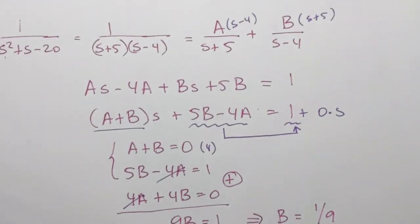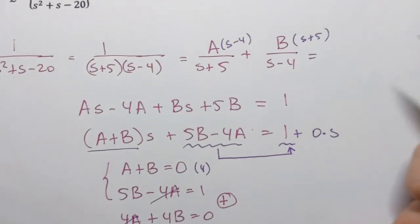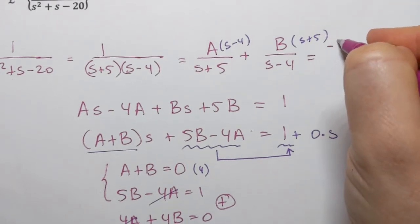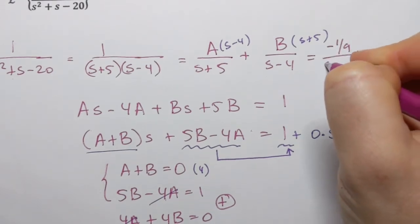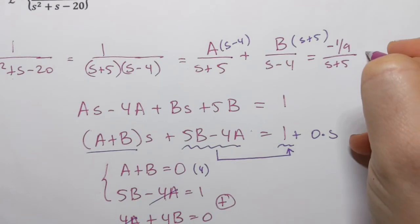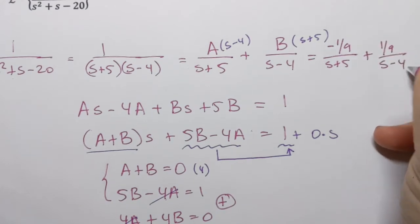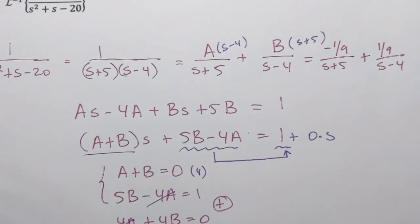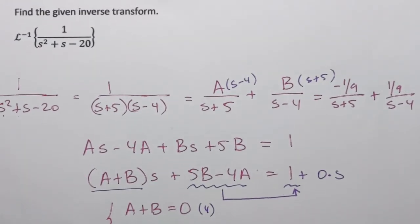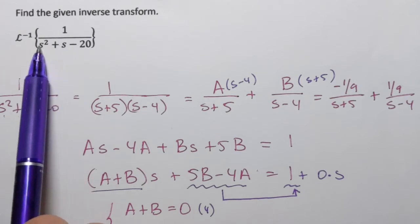Now, if I put a and b back into my expression, that's going to be negative 1 over 9 over s plus 5 plus 1 over 9 over s minus 4. And now remember, this all came from our function for which we need to find inverse transform.